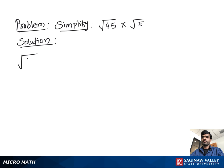Simplify square root of 45 times square root of 5. You can solve this in two different ways. One way: we multiply 45 times 5 because both are in square root form — if they were in different root forms you could not multiply. So you can write square root of 45 times 5.